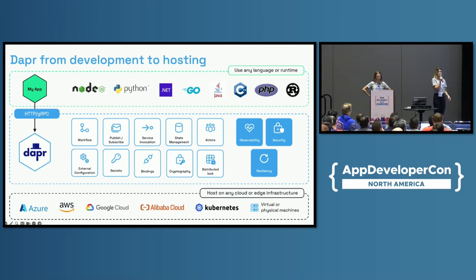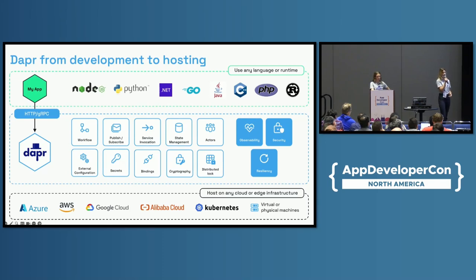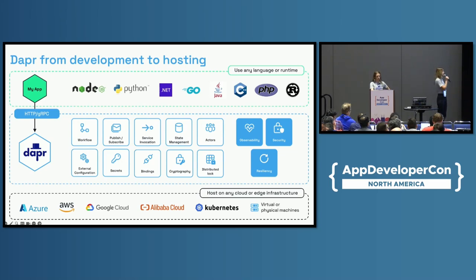Through a set of HTTP or gRPC APIs, you can access a set of building blocks. These building blocks are really just common patterns used to build distributed applications — choreography, orchestration, saga patterns. How do I do distributed communication across services? How do I get tracing and observability out of the box and implement resiliency policies? How can I directly invoke other services in a secure way using mTLS?